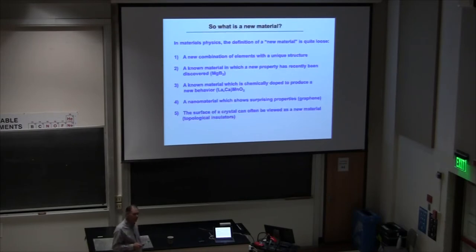It's a little sociology. Physicists and chemists usually mean different things when they talk about new materials. In physics, a new material has a looser definition. The chemistry definition is more of a unique combination of elements with a unique structure. But physicists often will take an old material where something new has been discovered, like magnesium diboride which has been around forever, and then somebody discovered superconductivity.